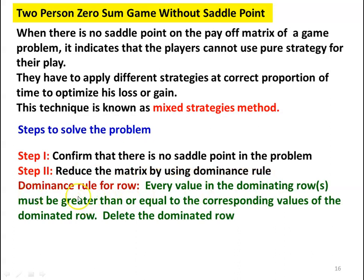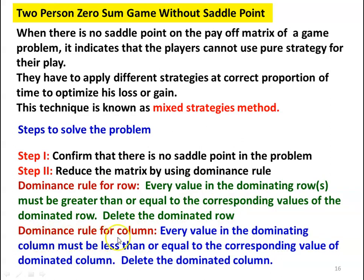There are two dominance rules. For the dominance rule for rows: every value in the dominating row must be greater than or equal to the corresponding values in the dominated row. We identify the dominating and dominated rows and delete the dominated row. For the dominance rule for columns: every value in the dominating column must be less than or equal to the corresponding values of the dominated column. Delete the dominated column.